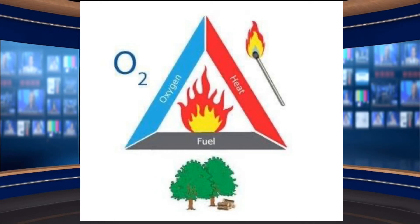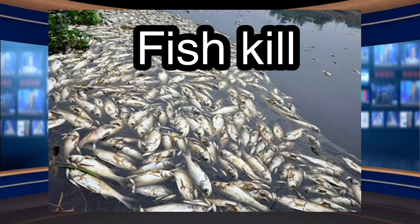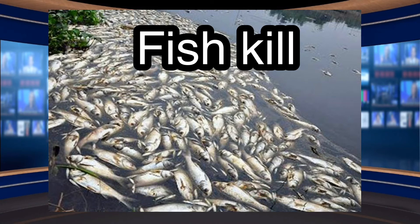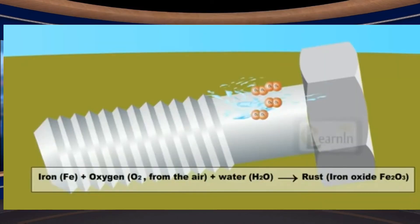The most common cause of fish kills is suffocation due to lack of dissolved oxygen. Most dissolved oxygen is produced by algae and aquatic plants through photosynthesis. There are many factors that cause oxygen to disappear from the water, such as a sudden change in temperature, sudden rain, or chemicals present in the water. When this happens, the oxygen is depleted and fish die immediately.